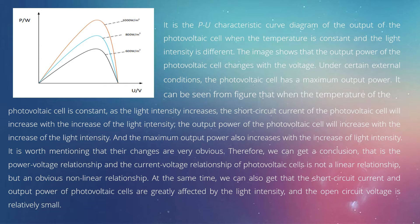It is worth mentioning that these changes are very obvious. We can draw the conclusion that the power-voltage relationship and the current-voltage relationship of the photovoltaic cell are not linear but exhibit an obvious non-linear relationship. The short circuit current and output power of photovoltaic cells are highly sensitive to light intensity.